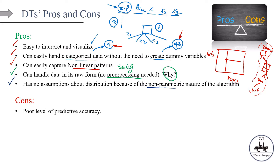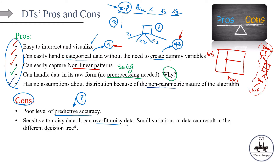So what are the disadvantages? The main disadvantage of decision trees is a poor level of predictive accuracy — that's the caveat of these models. We really like all the advantages, but the poor level of predictive power makes us wonder what we can do about it, and how we can extend the idea of decision trees. Another disadvantage is that decision trees are sensitive to noisy data — they can overfit noisy data, meaning a small variation in the data can result in a completely different decision tree. This can be reduced by bagging and boosting algorithms.